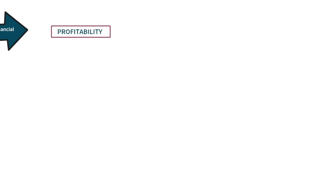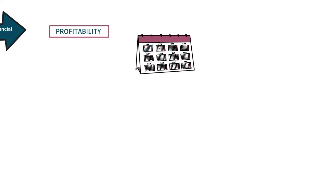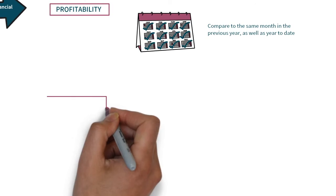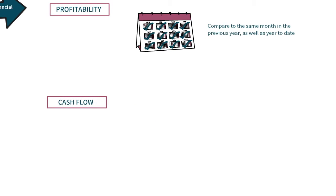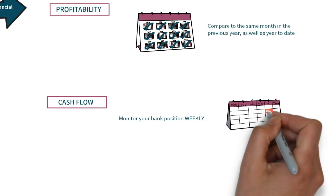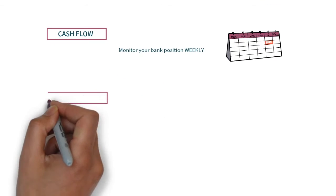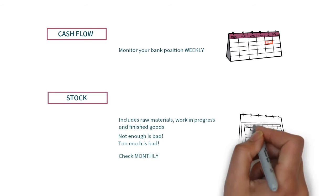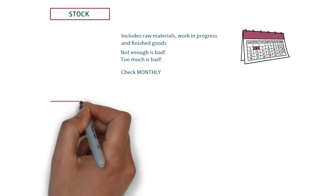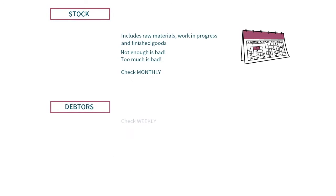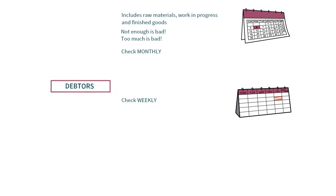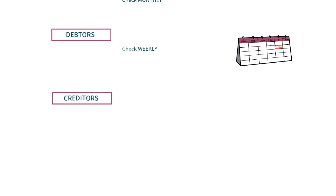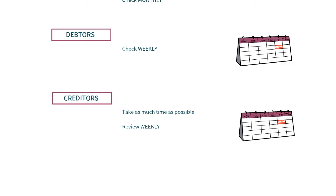Profitability — this is fundamental. We suggest reviewing the profitability of your business at least monthly, comparing to a set budget or target, against the same month in the previous year, as well as looking at year-to-date profit. Cash flow and the bank position — always have cash available to meet payments as they fall due; monitor this at least weekly. Stock — this is raw materials, work in progress, and finished goods; you don't want to run out or have too much, so monitor at least monthly. Debtors — review these weekly as a minimum. Creditors — take as much time as possible but be sure not to breach agreements; review these weekly as a minimum.